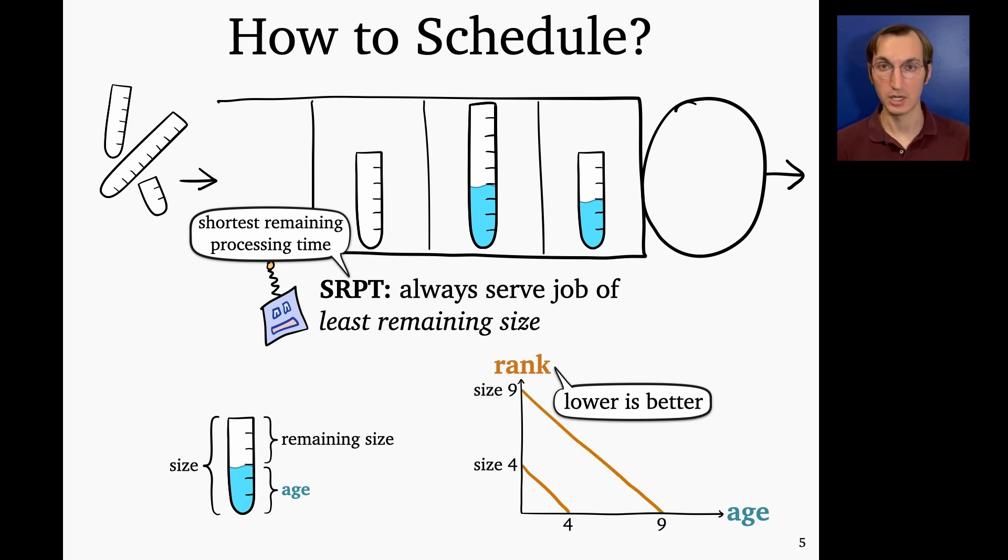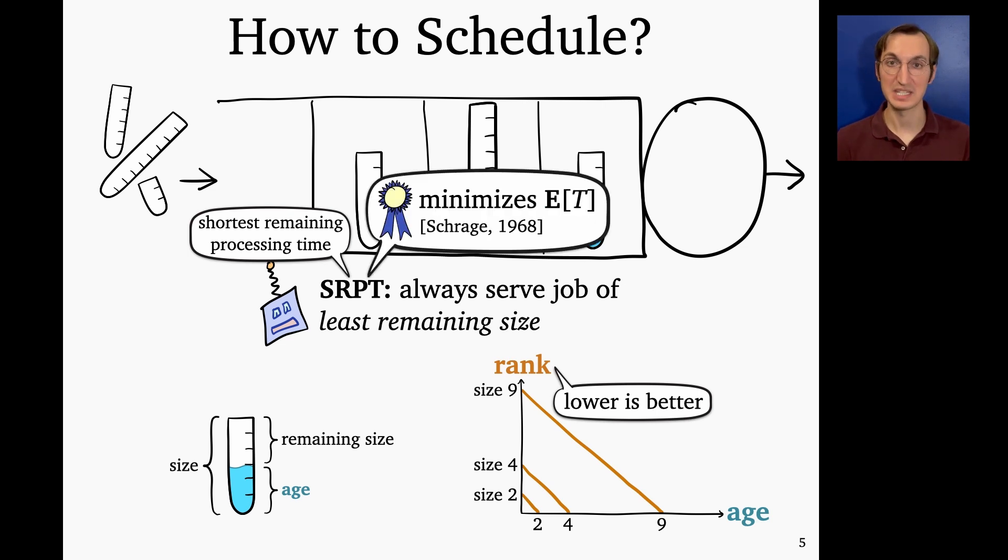I'm always serving the job of lowest rank, least remaining size. So a job of size four will start at rank four, and then as its age increases, its rank decreases at slope one until it reaches zero when the job completes. Similarly, a job of size nine, its rank would look like this, a job of size two, its rank would look like that. And so this is SRPT and a nice way to visualize it. And it's been shown that SRPT minimizes mean response time. This is a classic result shown in the 1960s. Okay, so SRPT is a pretty simple policy and it's a pretty simple proof of optimality.